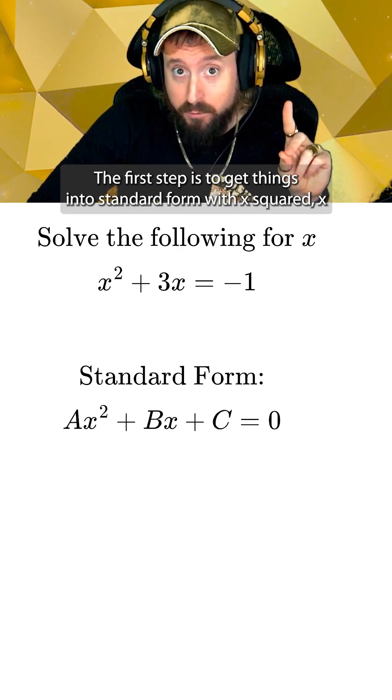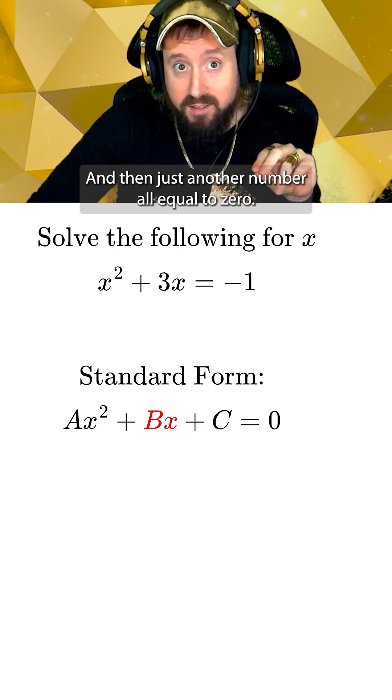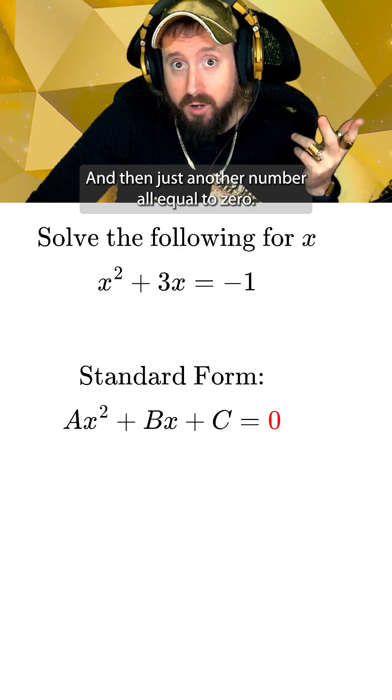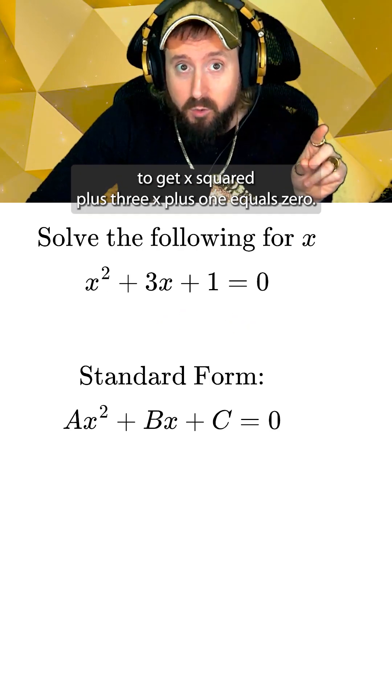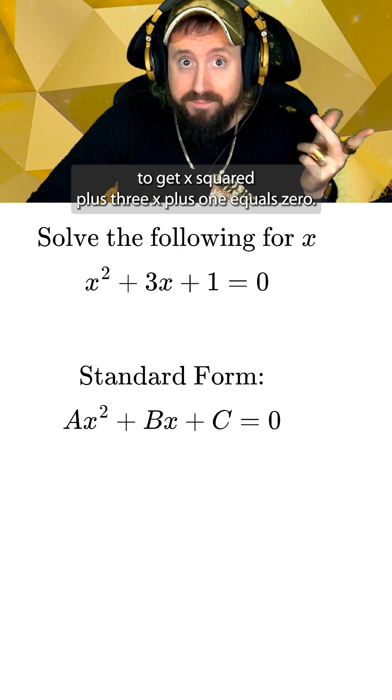The first step is to get things into standard form with x squared, x, and then just another number all equal to zero. For this example that means just adding 1 to both sides to get x² + 3x + 1 = 0.